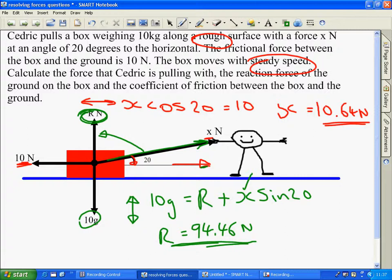Now, it's also asked us to find the coefficient of friction, mu. Now, because it's moving at steady speed, we know friction has reached a maximum. So, we can write that friction is equal to mu multiplied by R, the normal reaction.